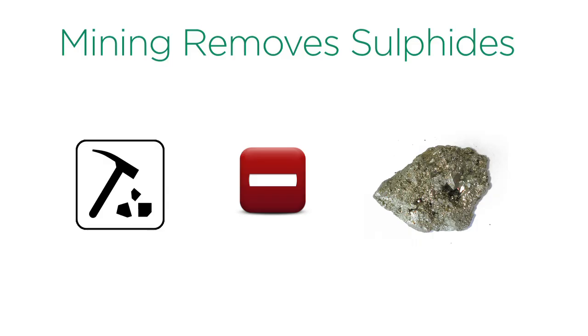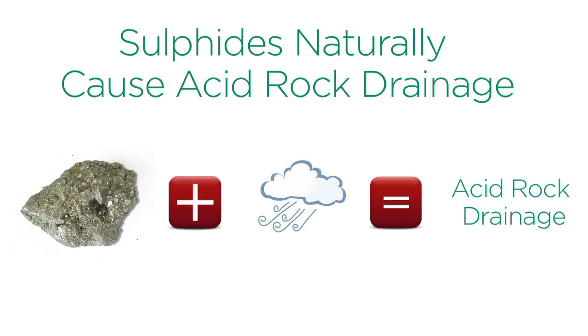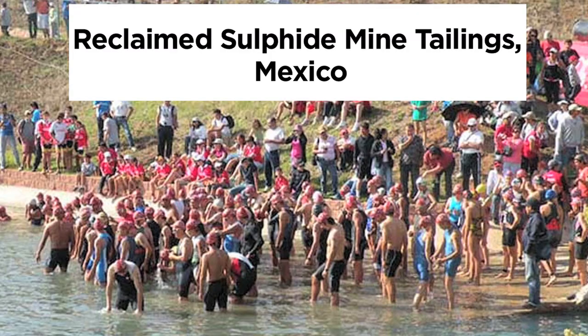Mining removes and sequesters sulfides from where they would naturally cause acid rock drainage from weathering. In this way, modern mining could, in fact, locally improve water quality where acid environments harmful to aquatic life might not naturally prevail.